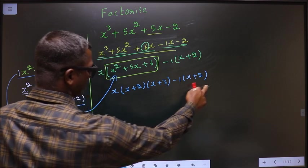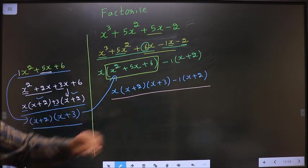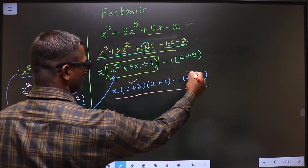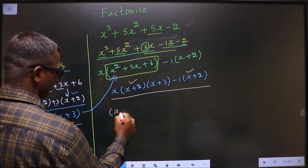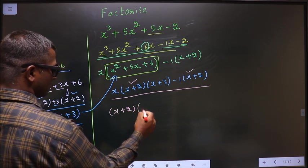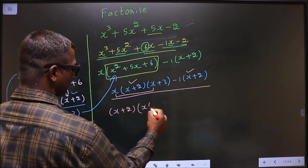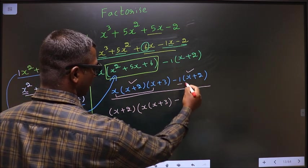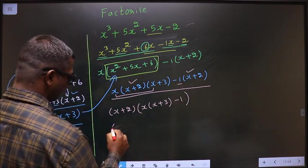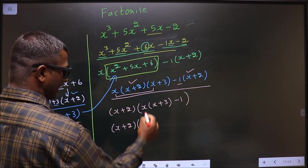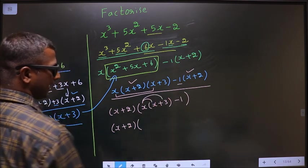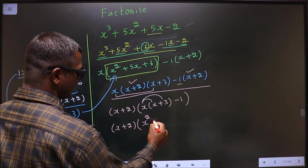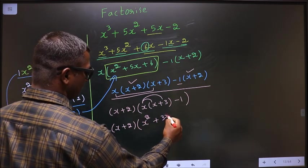Okay. Now, what can you take common from this entire expression is x plus 2. So here you are left out with x times x plus 3 and here you are left out with 1. So next, open up the bracket in this way. So x times x is x square, x times 3 is 3x minus 1.